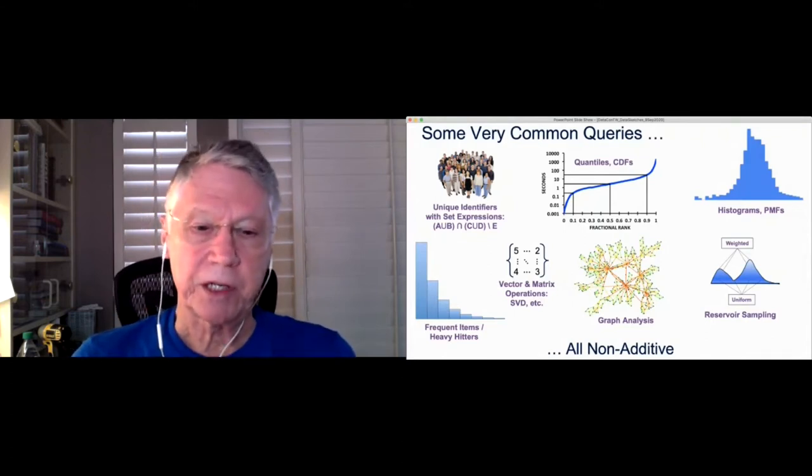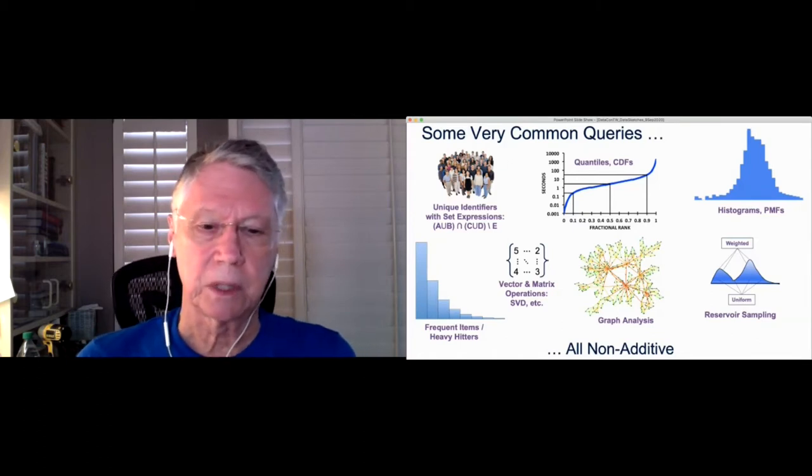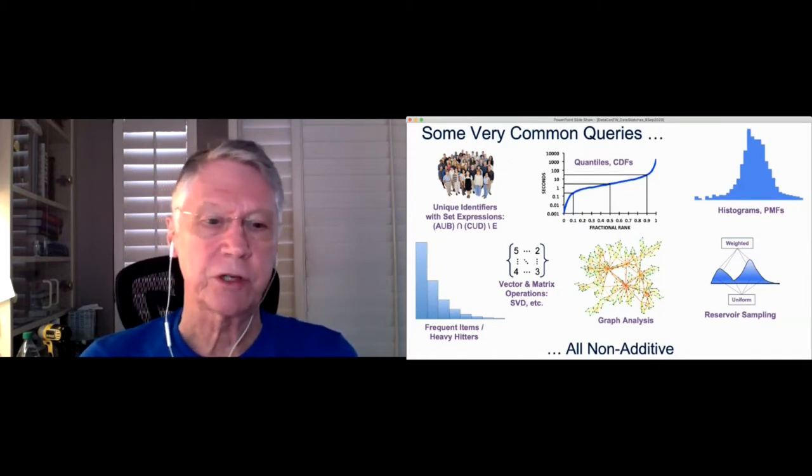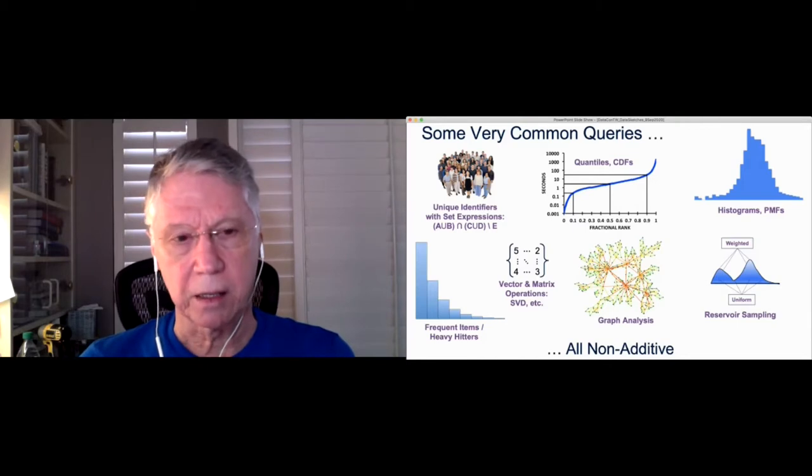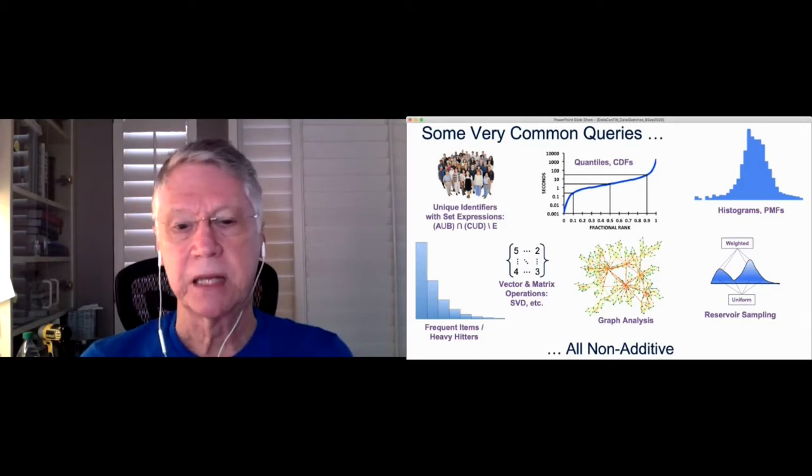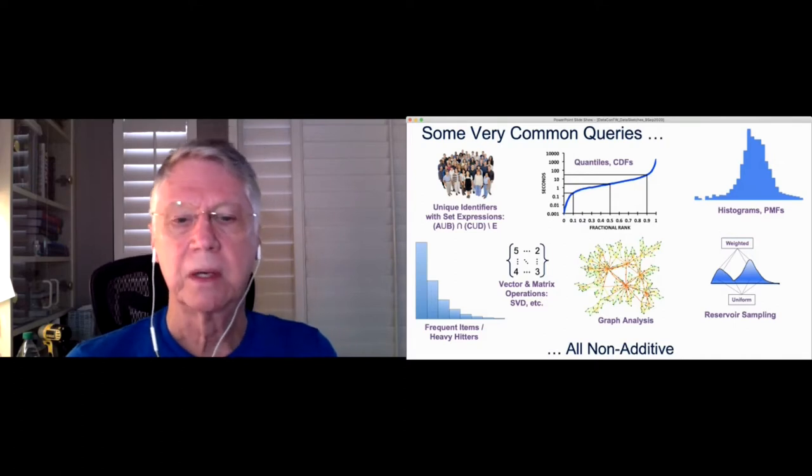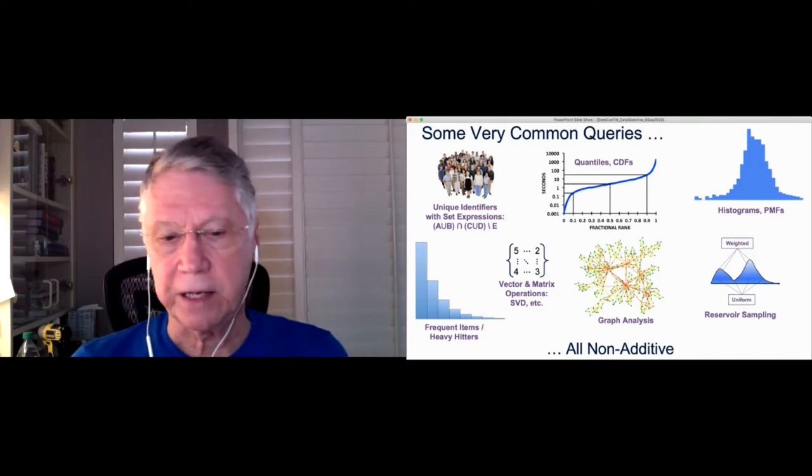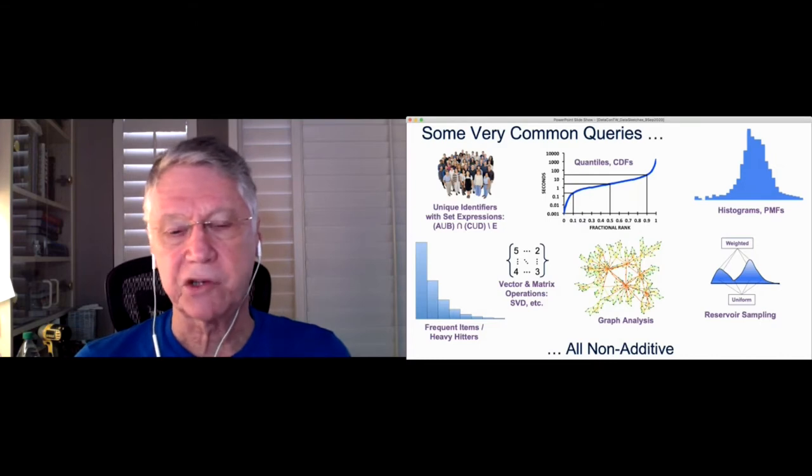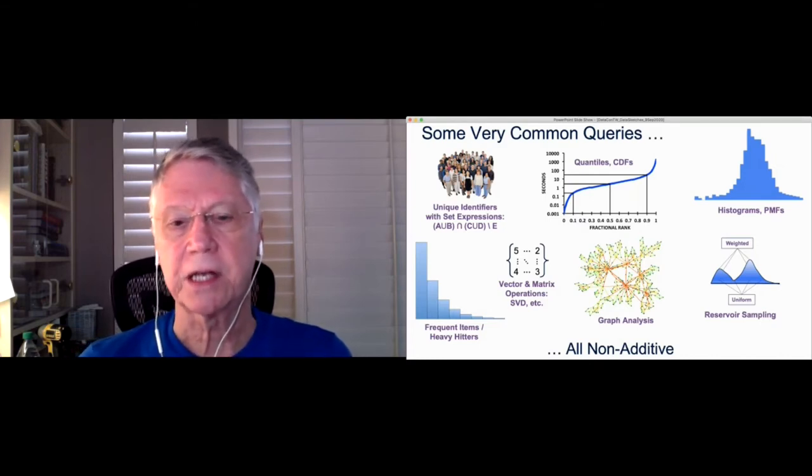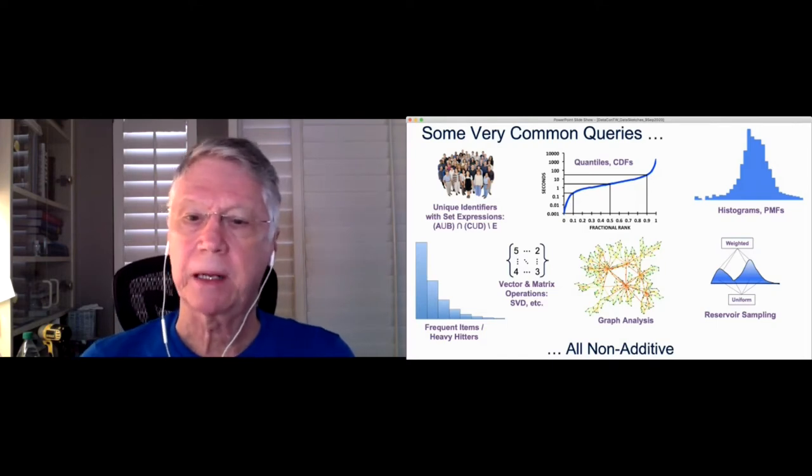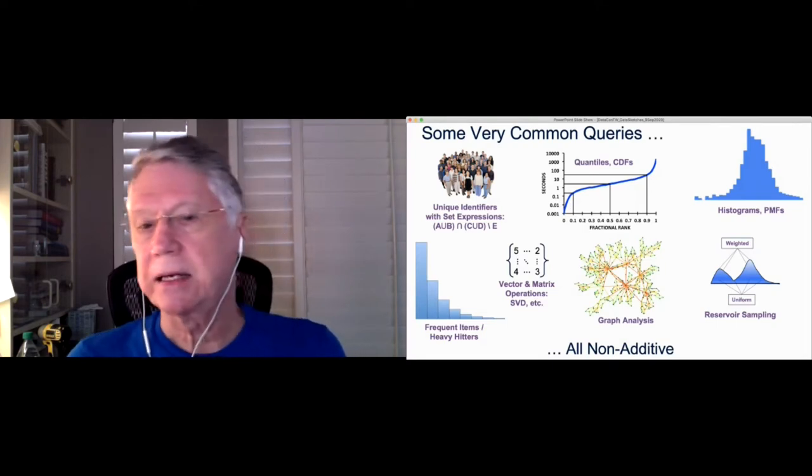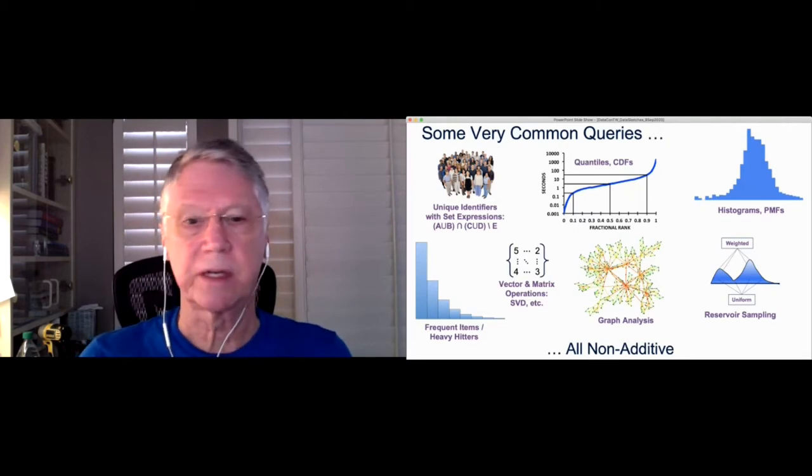Another kind of operations that are also applicable for approximate analysis is vector and matrix operations. Singular value decomposition is also a very key process for analyzing our data. Graph analysis, we all live in networks of various types, and we want to be able to understand the structure and density of the networks at various times. And other kinds of analysis where we want to do sampling and either weighted probabilistic sampling or uniform sampling of our data and do that in a very efficient way and in a streaming way.